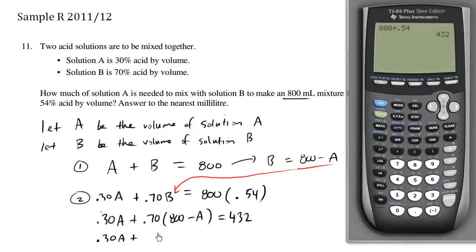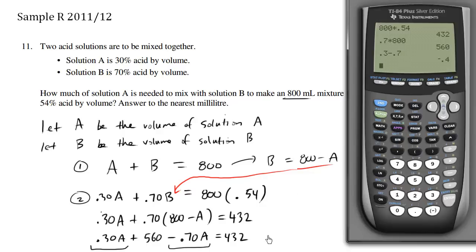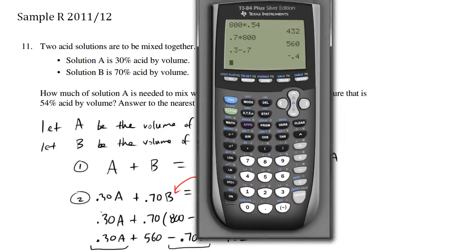0.30A plus 0.70 times 800 equals 560. So this times this is 560 minus 0.70A, I'm just distributing, equals 432. We have a common A here and a common A here. We're simply going to add the coefficients. So we have 0.3 minus 0.7 equals negative 0.4.